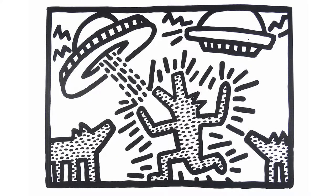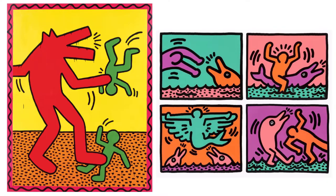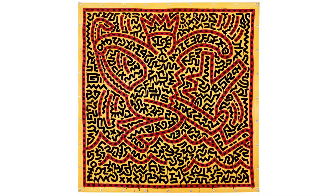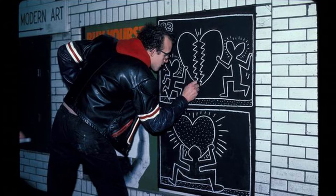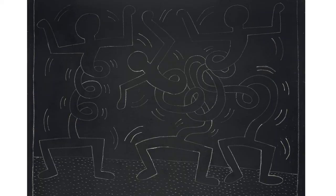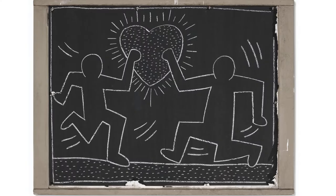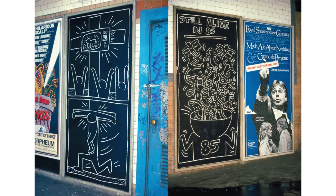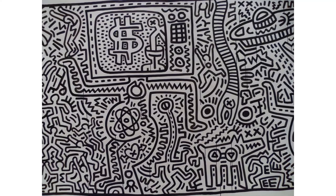Haring was inspired by graffiti artists and pop art. Living in New York, he drew hundreds of drawings on the subway in chalk. He would get in trouble sometimes, but continued drawing anyway because he wanted everyone to experience art.